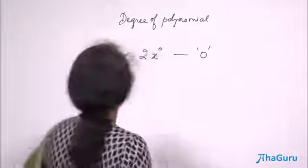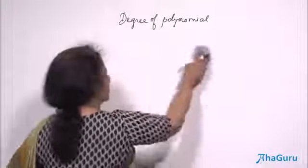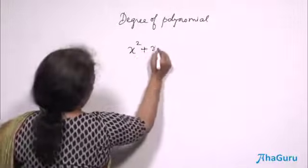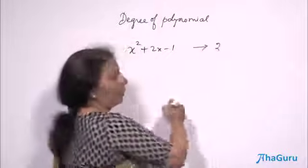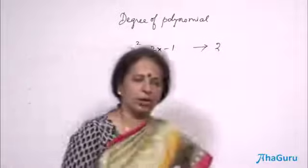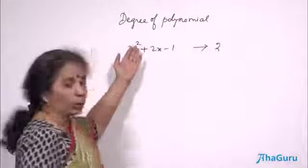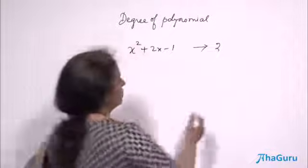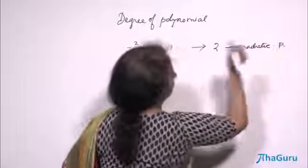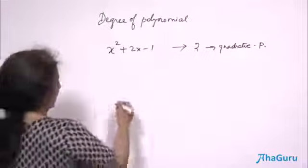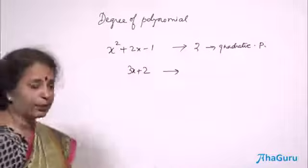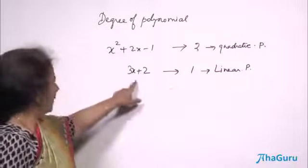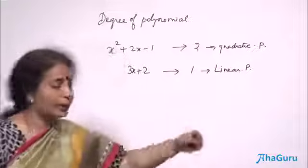Apart from this, there are a few more things we must know about polynomials — names you would have studied in smaller classes. If you have a polynomial x squared plus 2x minus 1, the degree is 2. A polynomial with degree 2 is known as a quadratic polynomial. If it is say 3x plus 2, the highest power is 1, and it is called a linear polynomial. So degree 1 means linear, and degree 2 means quadratic.